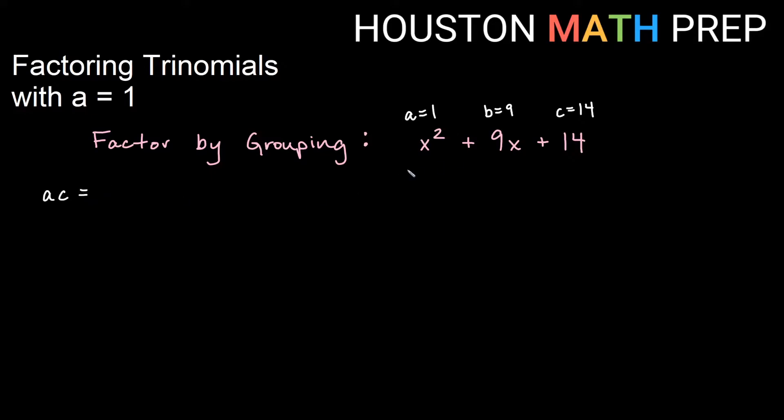So here a times c, since a is 1, a times c is just c, right? 1 times 14 would be 14, and b is 9. And the way we do grouping, if you recall, is that we look for two numbers that multiply to give us a times c, in this case 14, and those same two numbers add to give us b, in this case, which is 9.